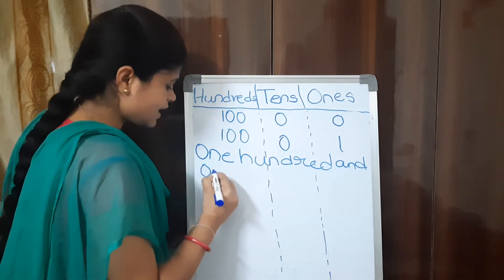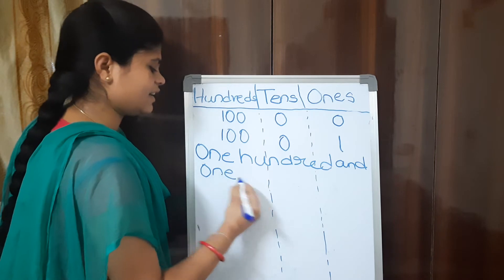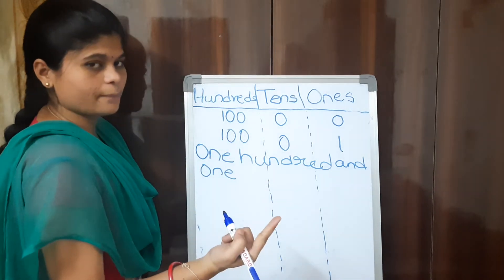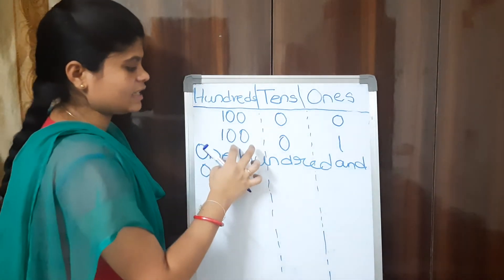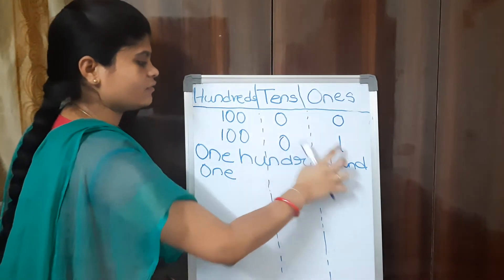The number name of 101 is one hundred and one. After 100, we are adding one more number, that is the reason it is called one hundred and one.